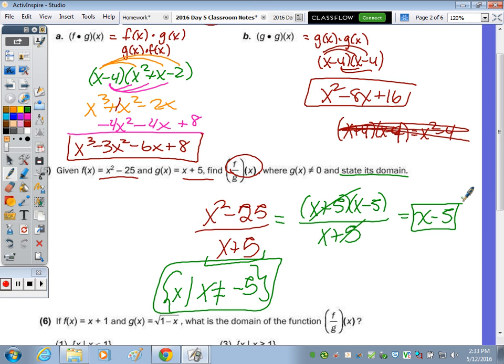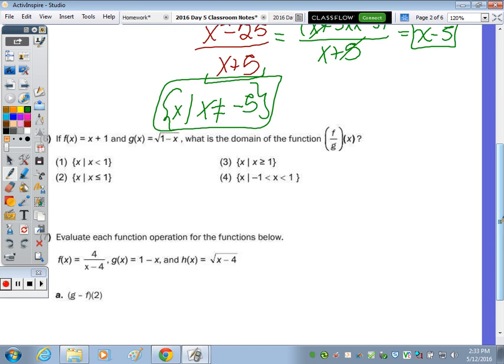Two more. Next one's multiple choice. If F of X is X plus 1, so that's linear. And then G of X is the square root function, 1 minus X. What is the domain? So let's actually write it out. So it looks like X plus 1 over the square root of 1 minus X. It's a fraction. So we don't want the denominator to be 0.